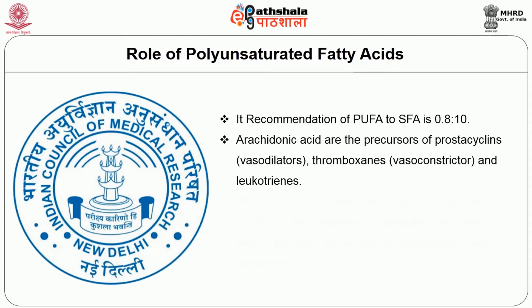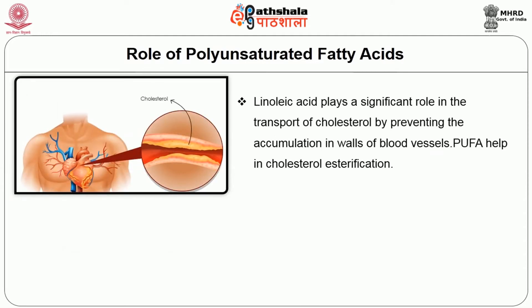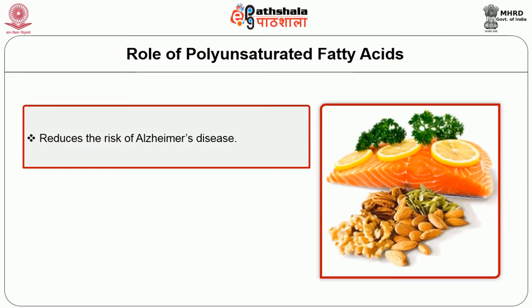Arachidonic acid is the precursor of prostacyclins which act as vasodilators, thromboxanes which act as vasoconstrictors, and leukotrienes. These help in the prevention of formation of thrombus. PUFA contains anti-platelet aggregate factor and hence decreases the sticking of platelets and reduces thrombosis. Linoleic acid plays a significant role in the transport of cholesterol by preventing its accumulation in walls of the blood vessels. PUFA helps in cholesterol esterification and prevents the incidence of coronary heart disease by decreasing the synthesis of VLDL, LDL and triglyceride levels. PUFA also reduces the risk of Alzheimer's disease.